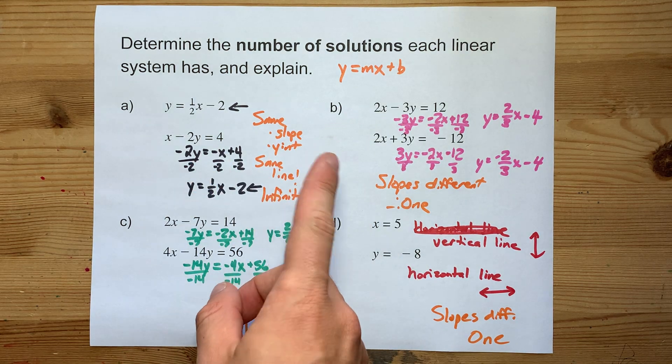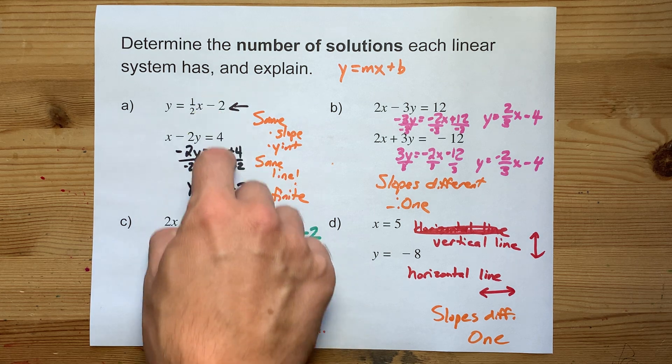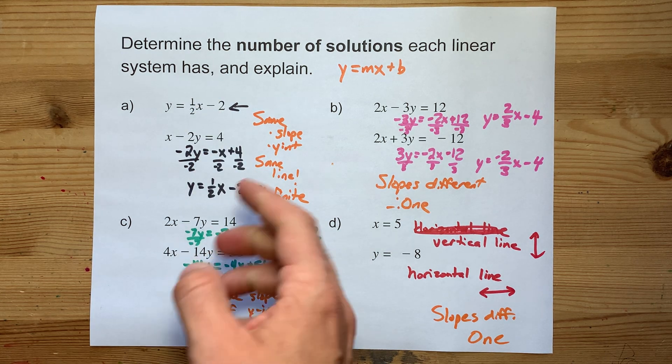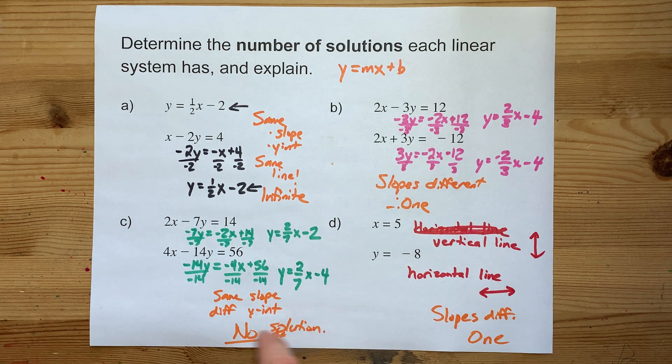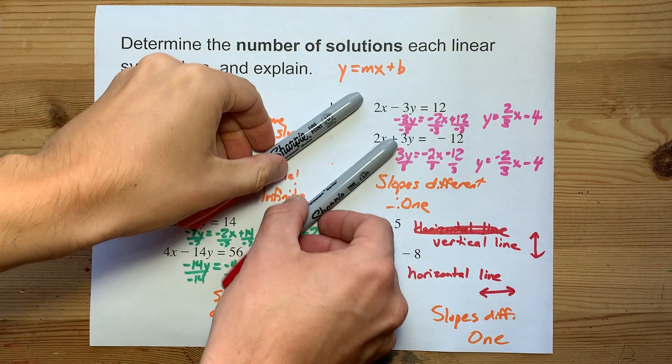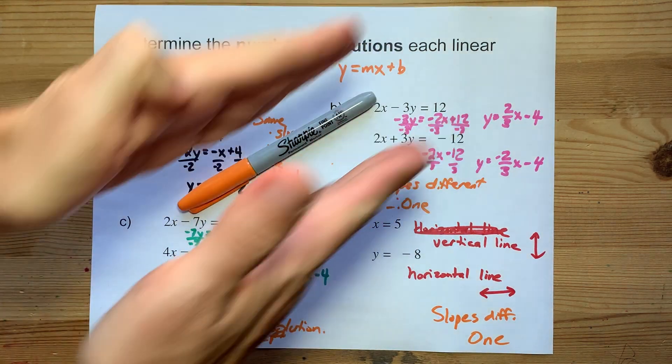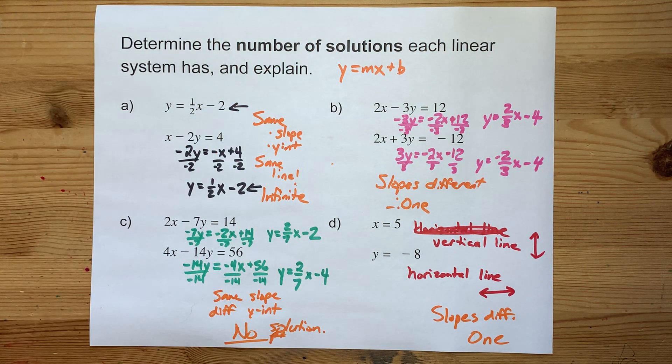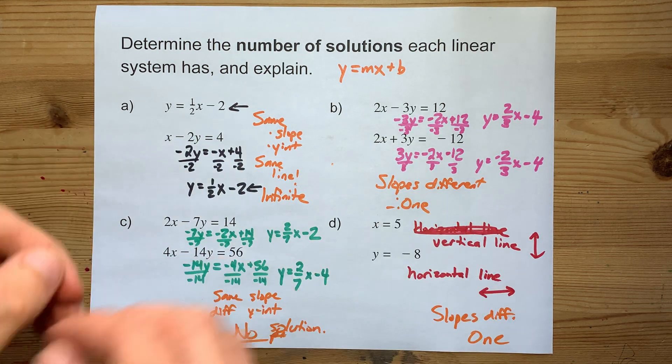If the y-intercepts are the same too, there's infinite solutions because they're the same line. And if the y-intercepts are different, then there's no solution. Because the two lines are parallel, they start in different places because they have different y-intercepts, and they never meet. Nice. Congratulations. You just graduated. Best of luck.